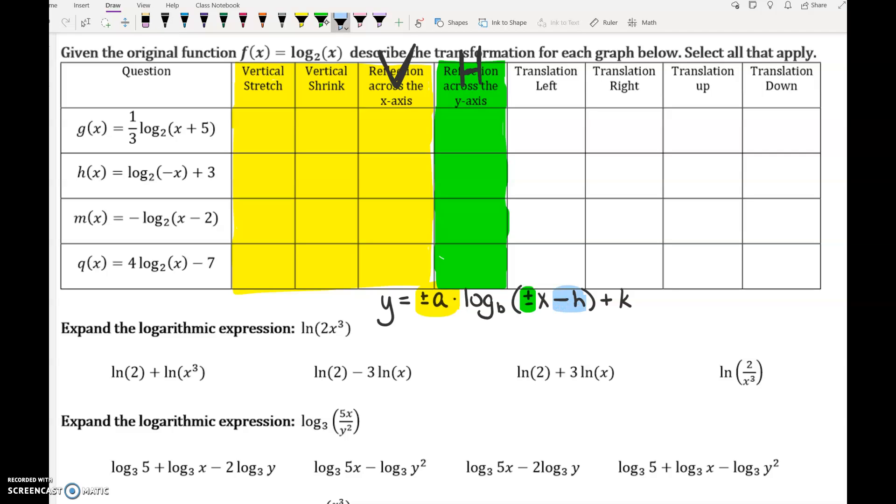Next up is the minus h. The minus h is going to tell you if this graph moves left or right. And then the plus k is the translation up or down. That's when the graph moves up or down.